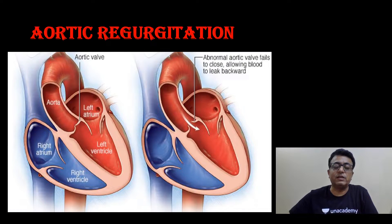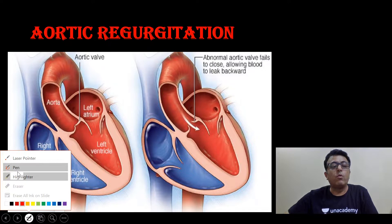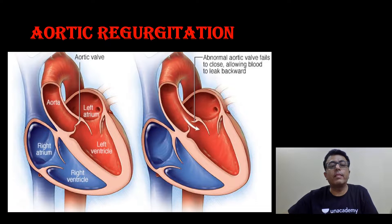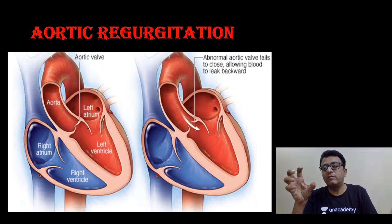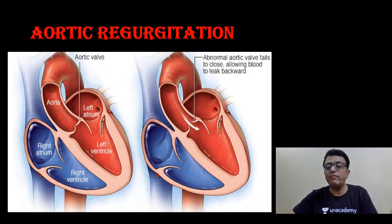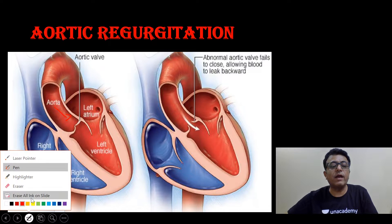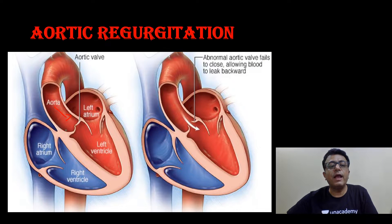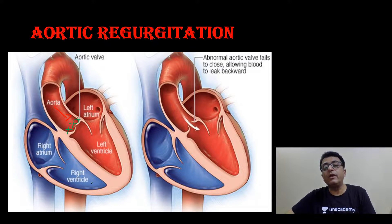What is aortic regurgitation? In the normal picture, once the LV contracts, blood goes to the aorta. When LV begins to dilate, the blood which has gone to the periphery tries to come back into the LV but cannot, because the aortic valve closes. So this blood is not able to return to the LV at the beginning of diastole.